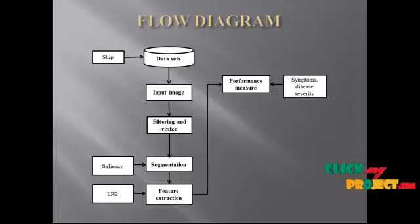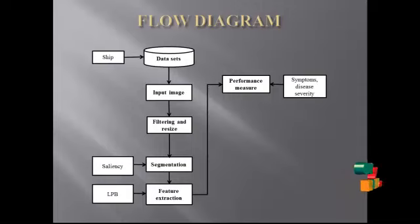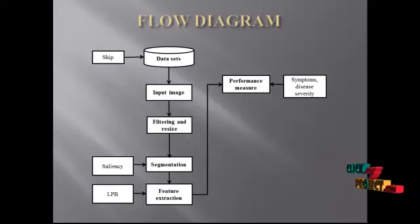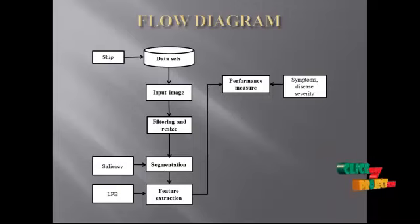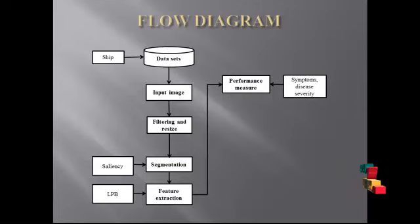After preprocessing, we segment the image. In the segmentation process, we implement the saliency method, which is based on background subtraction as well as ship detection using binary segmentation. Next, we extract features. In feature extraction, we use LBP — Local Binary Pattern — which represents binary values of detected objects as zeros and ones.